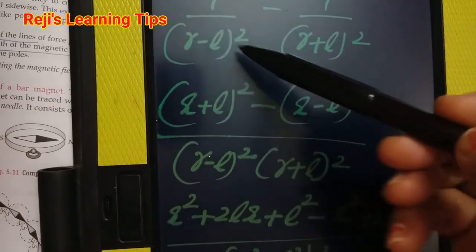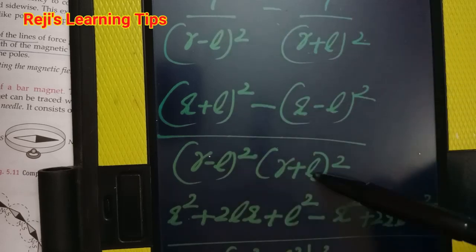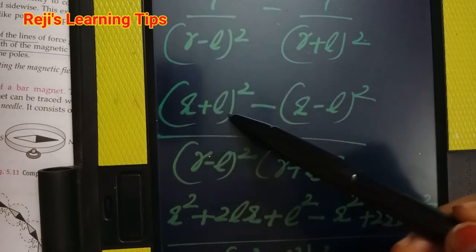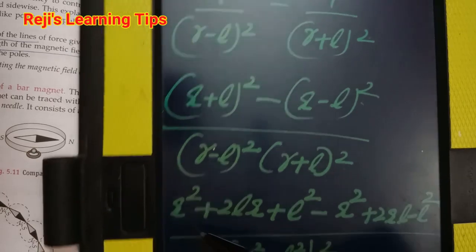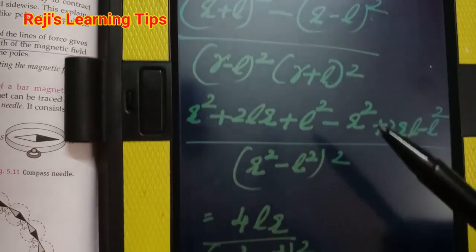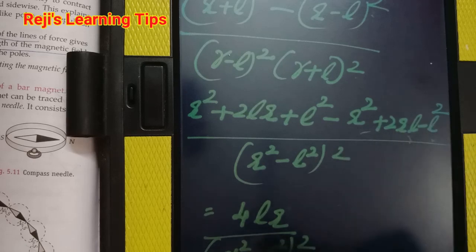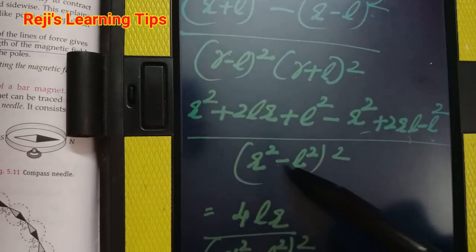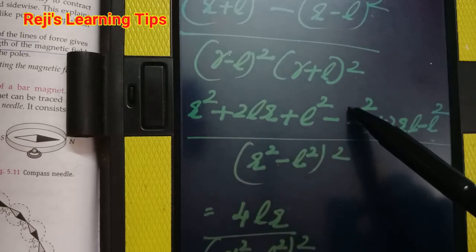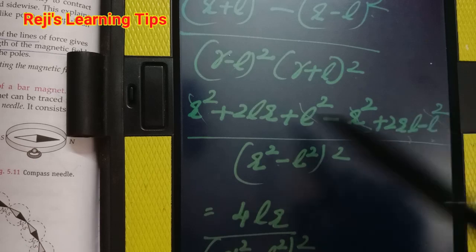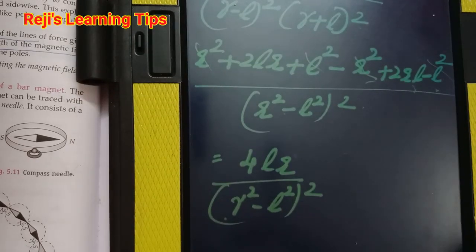Taking LCM as (R−L)²(R+L)², the numerator becomes (R+L)² − (R−L)² equals 4LR. The denominator becomes (R²−L²)². So B_axial equals mu0·QM divided by 4pi times 4LR divided by (R²−L²)².